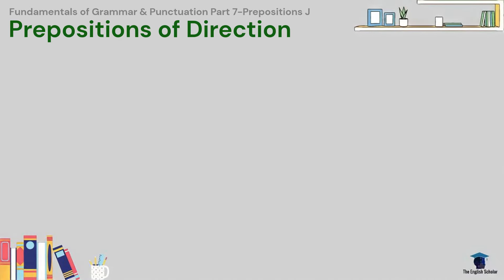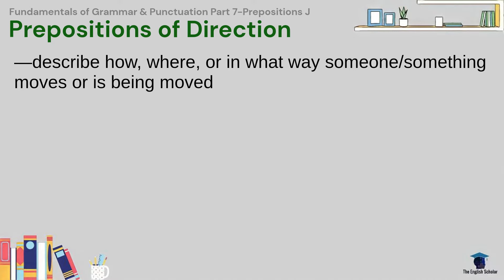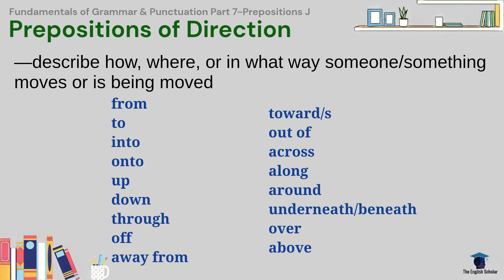A preposition of direction describes how, where, or in what way someone or something moves or is being moved. We have 17 prepositions of movement or direction.